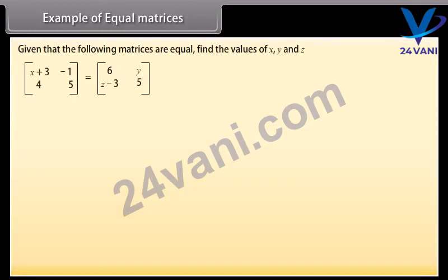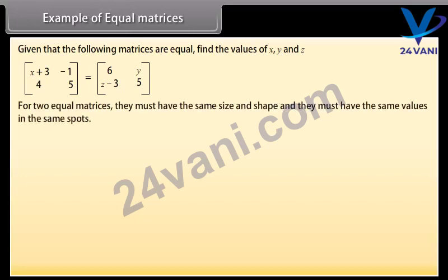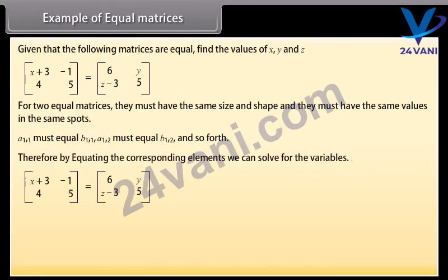Example of equal matrices. Given that the following matrices are equal, find the values of x, y, and z. For two equal matrices, they must have the same size and shape, and the same values in the same spots — that is, a₁₁ must equal b₁₁, a₁₂ must equal b₁₂, and so forth. By equating the corresponding elements: x plus 3 equals 6, so x equals 3; y equals minus 1; z minus 3 equals 4, so z equals 7.